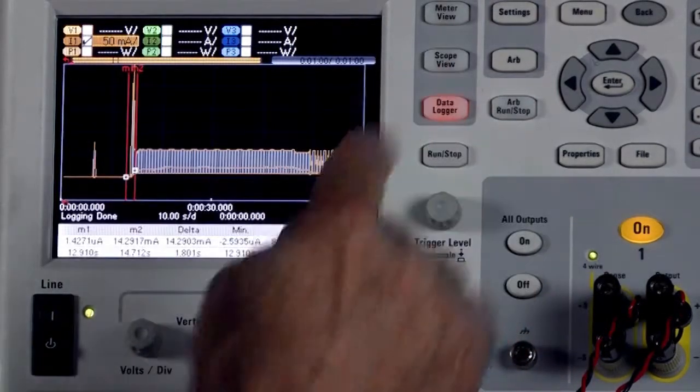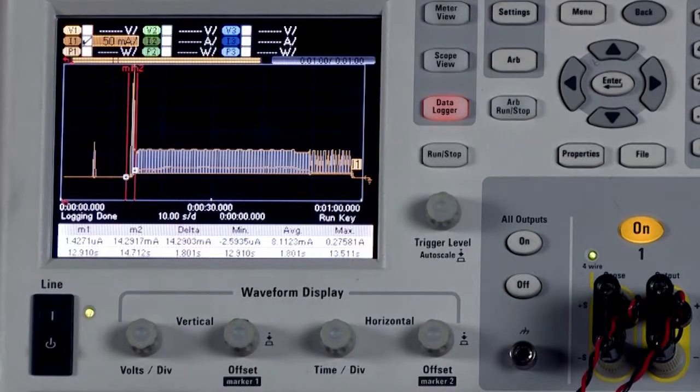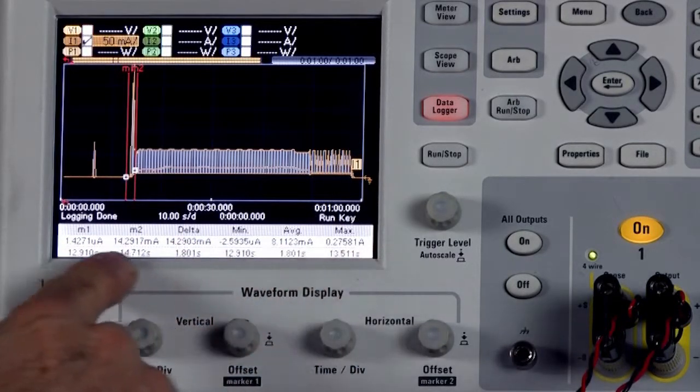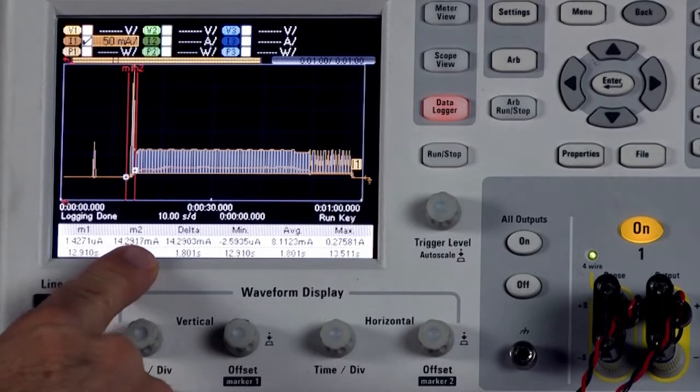All I need to do is hit the data logger button again and you can see two markers appear. These markers are used to help you analyze the waveform here that you're looking at. If you look at the text at the bottom of the display, you can see M1 for marker 1 and M2 for marker 2 tell you what is the current at that place in the time scale.